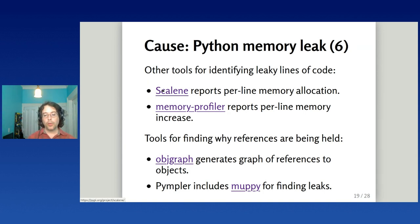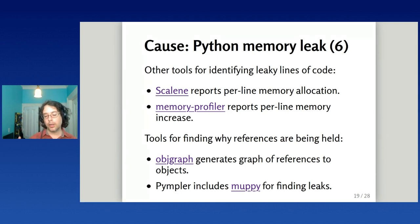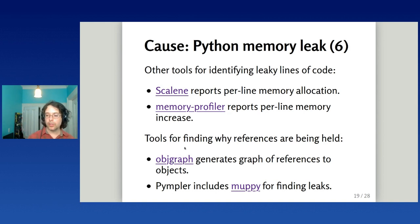Sometimes you can't use Fil because the leaked memory is small enough not to show up at peak. In that case you can try the Scalene or memory-profiler tools, which give you line-by-line memory allocation information. Once you've found a leak and want to debug which references are holding on to objects, there's a tool called muppy (part of Pympler) and a tool called objgraph, which generates a visualization of references to objects.